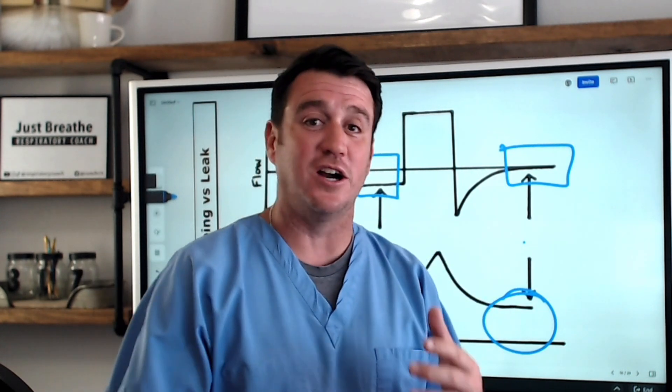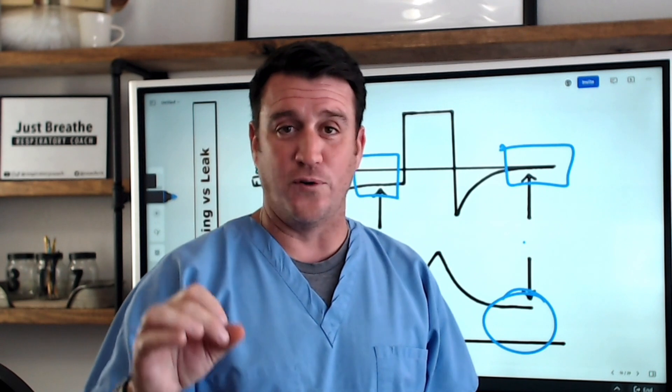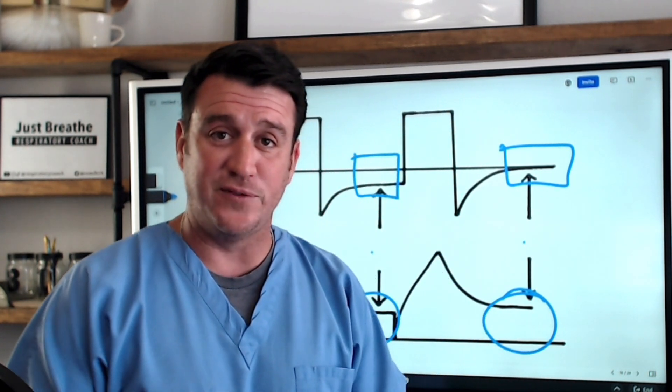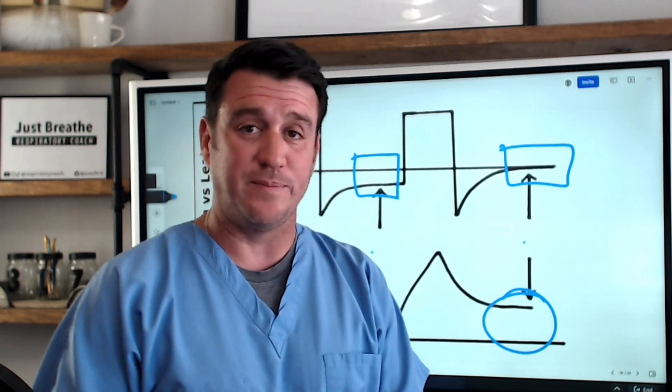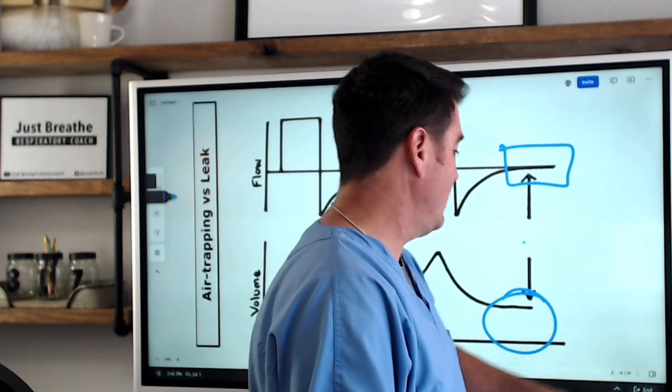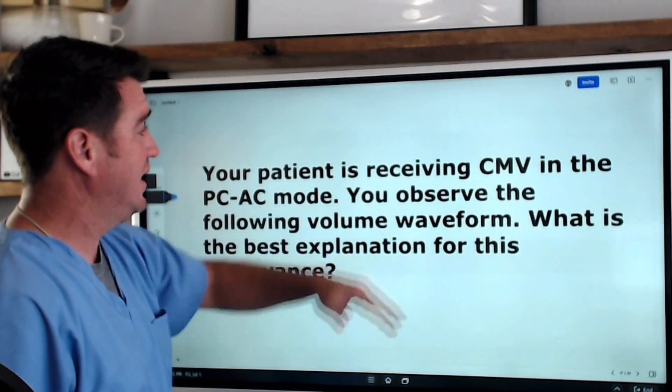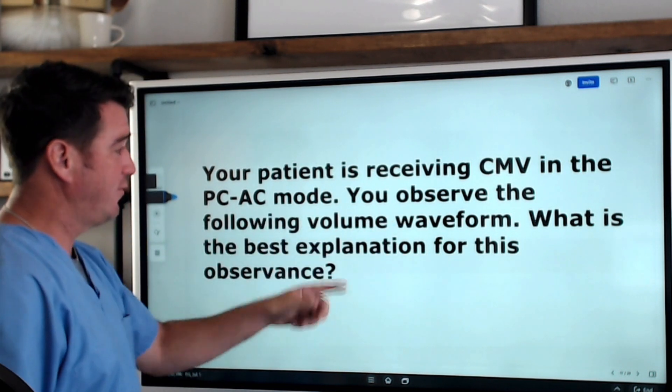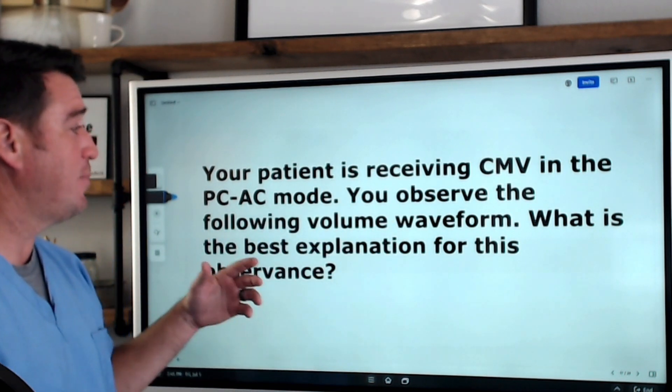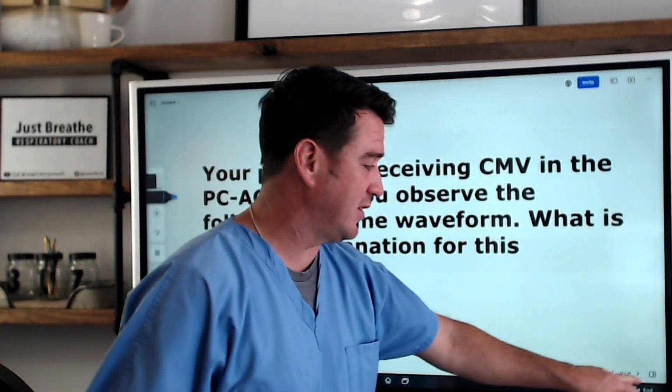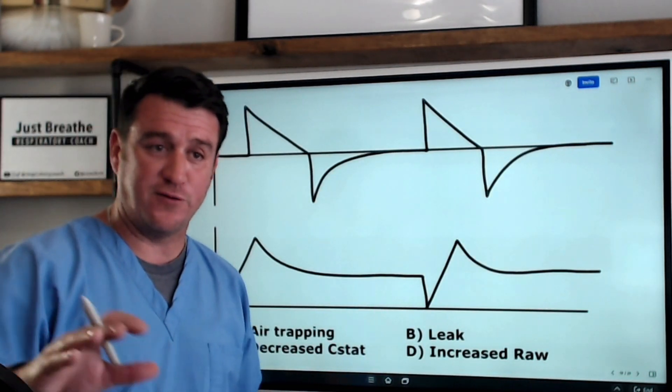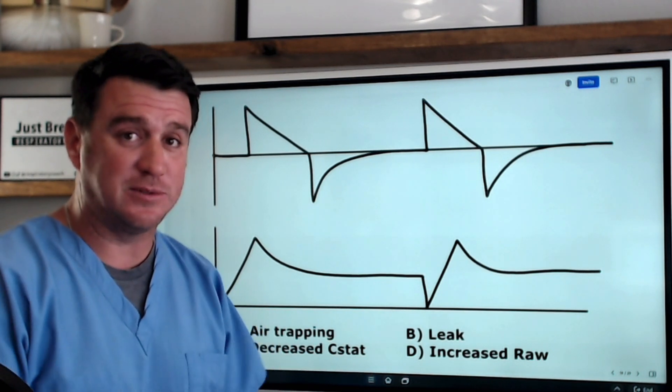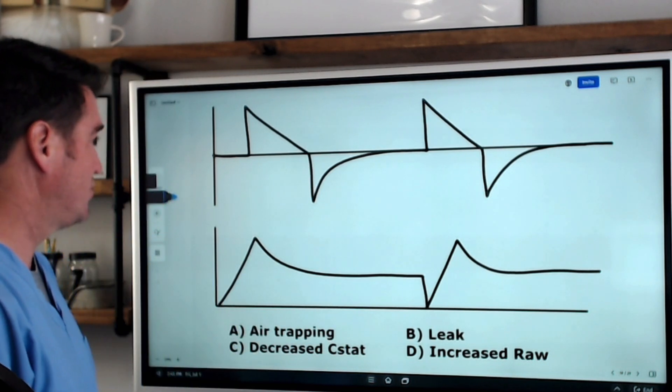Now, you know what we're going to do now. I've got a couple of volume waveform questions that we're going to pose to you. Be sure and pause this video after you see the illustration, and I will let you know what the answer is here. So your patient is receiving CMV in the pressure control assist control mode. You observe the following flow waveform. What is the best explanation for this observance? Go ahead and pause this right now if you want to see if you get this answer correctly before I talk about it. I'm going to keep talking, but feel free to pause and answer this question.